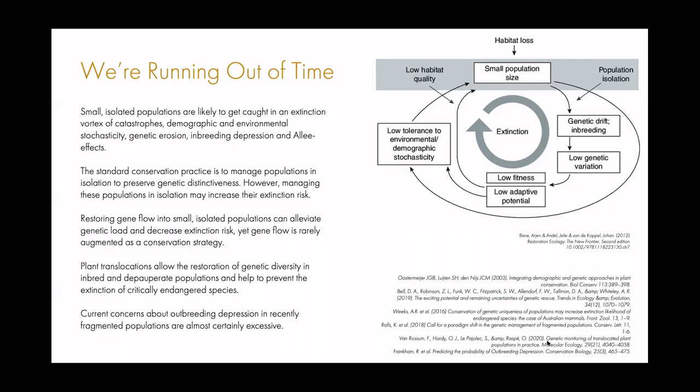However, here is a small list of peer-reviewed journals that have looked at this subject extensively, and the consensus is that we must restore gene flow into these small isolated populations in order to alleviate genetic load and decrease the risk of extinction. Plant translocations allow the restoration of genetic diversity, and current concerns about outbreeding depression — the idea that we shouldn't introduce plants from a different area or ecoregion to cross-pollinate with rare plant species — are almost certainly excessive in populations which are recently fragmented. When they say 'recently fragmented,' they mean in the last 500 years.